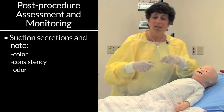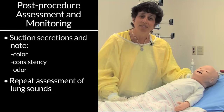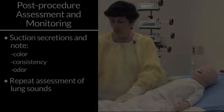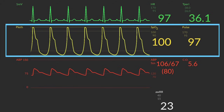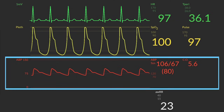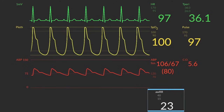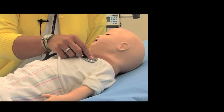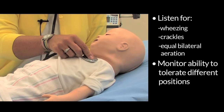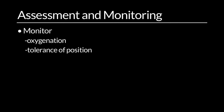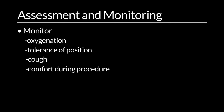Once done suctioning and the patient looks well, do another assessment of lung sounds and see if there's any change from the beginning of the procedure. It is important to monitor the patient's vital signs including oxygen saturation, heart rate, blood pressure, and respiratory rate and effort. You will also want to assess the patient's lungs — listening for wheezing, crackles, and whether aeration is equal on both sides — as well as monitoring the patient's oxygenation, tolerance of position, cough, and comfort during the procedure.